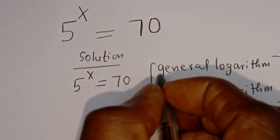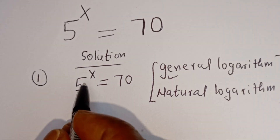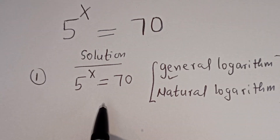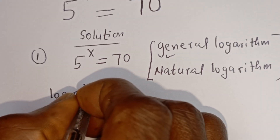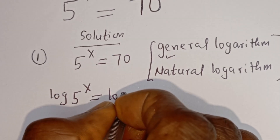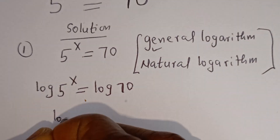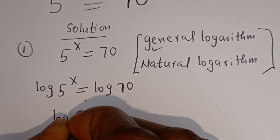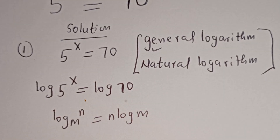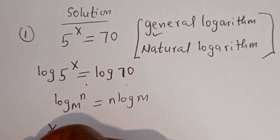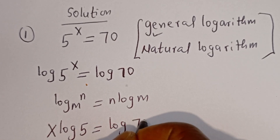Now let's consider the first case here. This first one, let's call this method 1. From 5 to the power of X is equal to 70, let's take the log of both sides. We have log of 5 to the power of X is equal to log 70. Then if you have log M to the power of N, this is equal to N log M. Then this can be written as X log 5 is equal to log 70.